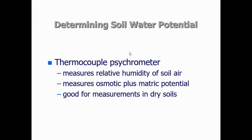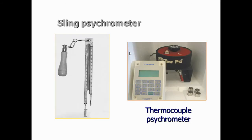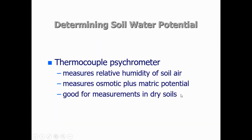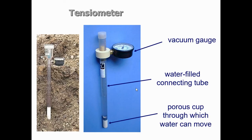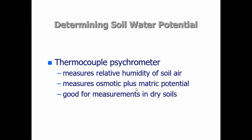The third device is the thermocouple psychrometer, which measures the relative humidity of soil water. Its advantage is that it can measure both matric potential and osmotic potential, giving a more complete picture of total water potential. The tensiometer only measures matric potential, while the psychrometer captures osmotic potential as well — which is important in saline conditions.